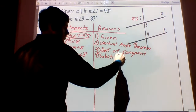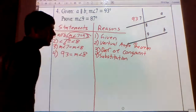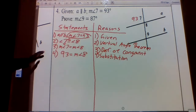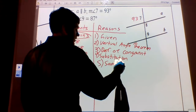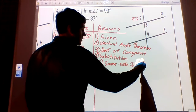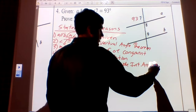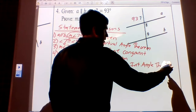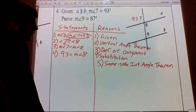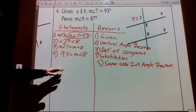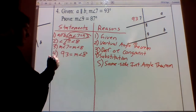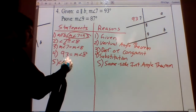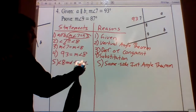This is exactly like proofs one and two. Now we've gone from seven to eight and found the measure of angle eight. Now we have to go from eight to nine. What angle pair do we have? Angles eight and nine are same-side interior angles, so we're going to use the same-side interior angle theorem. The same-side interior angle theorem says if the lines are parallel — and A and B are parallel — then the same-side interior angles are supplementary. So angle eight and angle nine are supplementary.